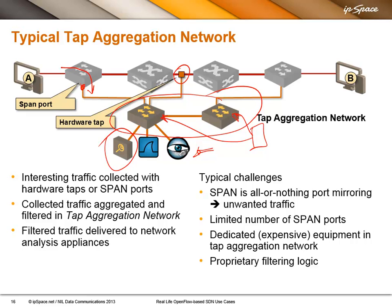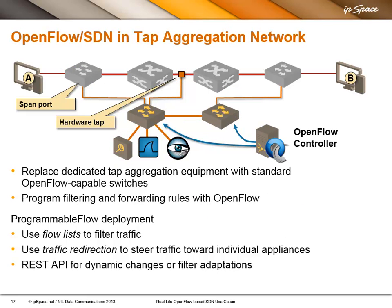It turns out that those specialized switches are, behind the scenes, nothing else than regular 10-gig switches, sometimes even using merchant silicon. Can we replace them with commodity switches? Of course we can. Instead of using dedicated switches, you can deploy OpenFlow-enabled switches and configure the distribution of traffic collected at the different taps or span ports, do the filtering as soon as possible on the ingress ports, and do the traffic distribution on the ingress ports. For example, traffic coming from MAC address B goes to your IDS, traffic from MAC address C goes to Wireshark, and traffic from port 80 goes to a particular tool.